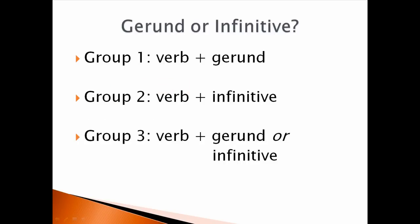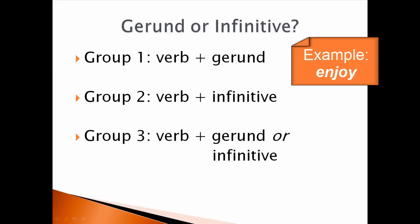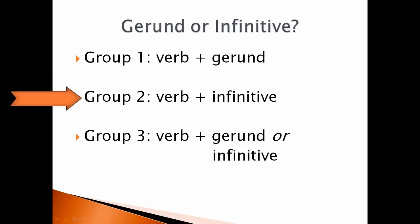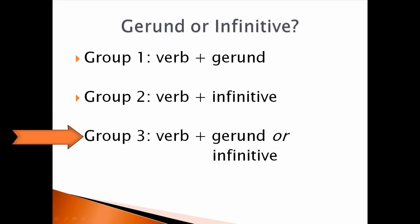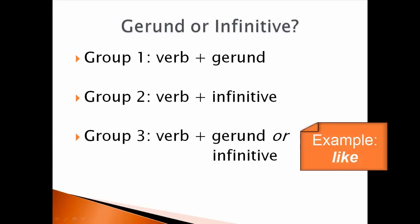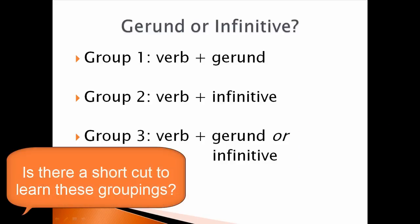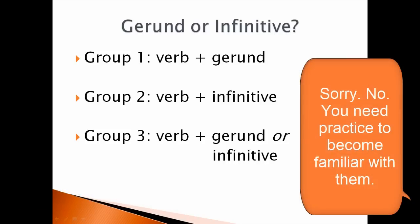To summarize: when we talk about verbs that take an object, we have three groups. In Group 1, verbs can only be followed by a gerund — example: enjoy → 'enjoy preparing.' In Group 2, verbs are only followed by an infinitive — example: promise → 'promise to turn.' In Group 3, verbs can be followed by either a gerund or an infinitive — example: like → 'like making' / 'like to make.' There's no shortcut; you need to study and practice each verb and the grammar it requires.